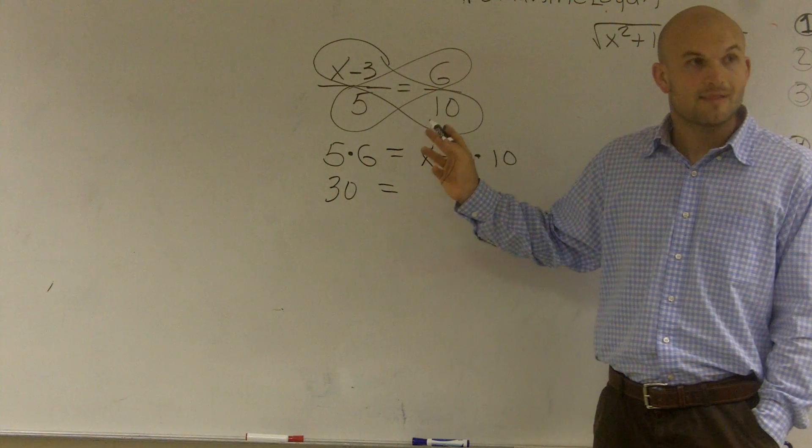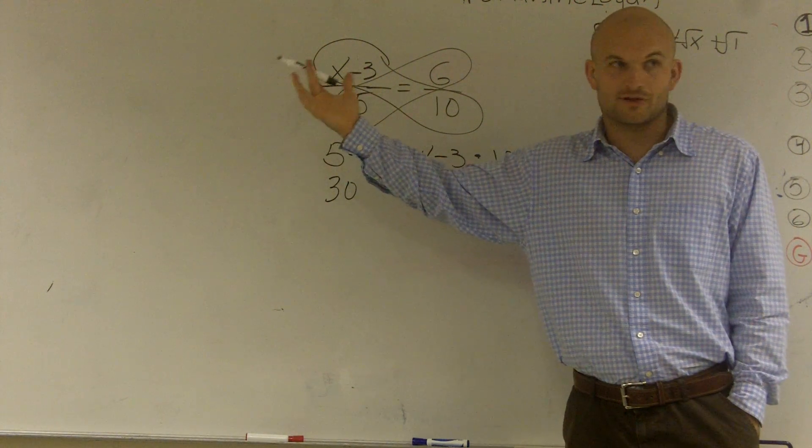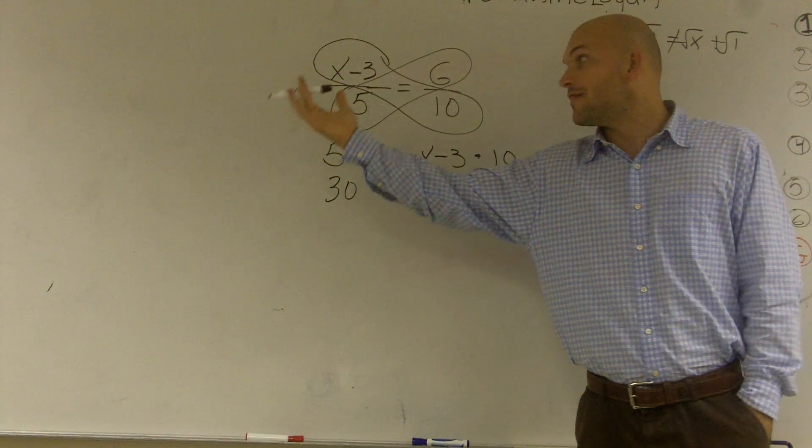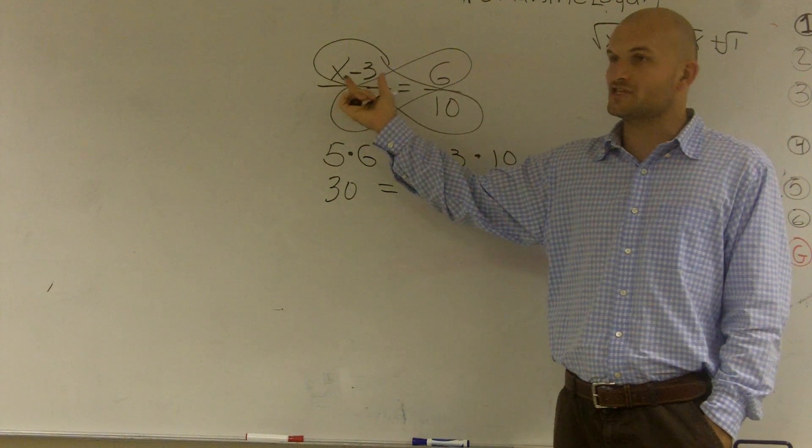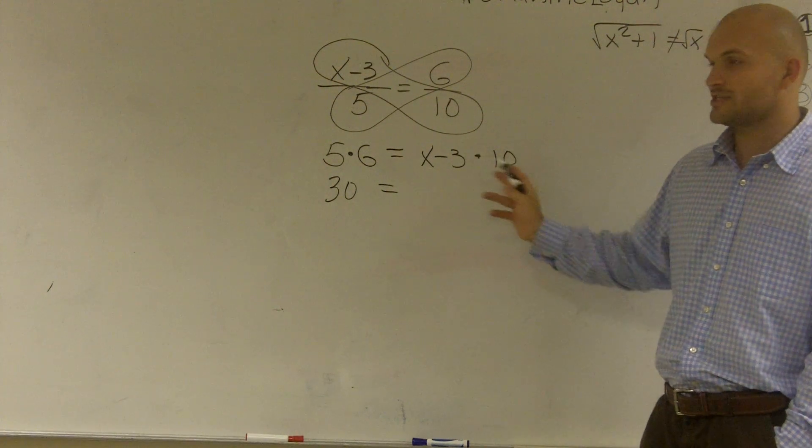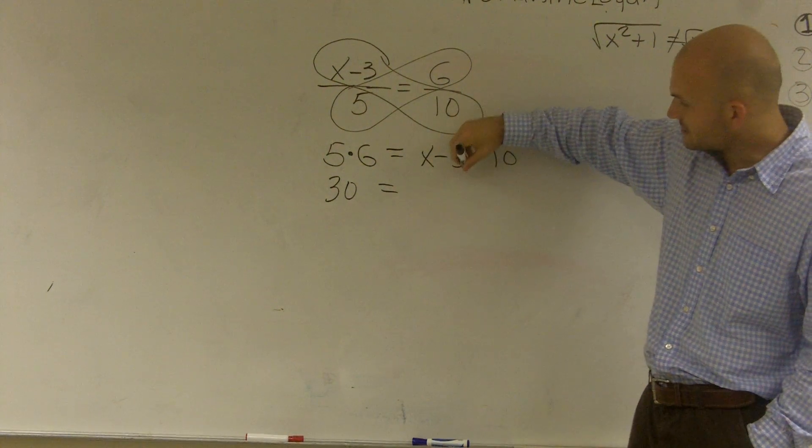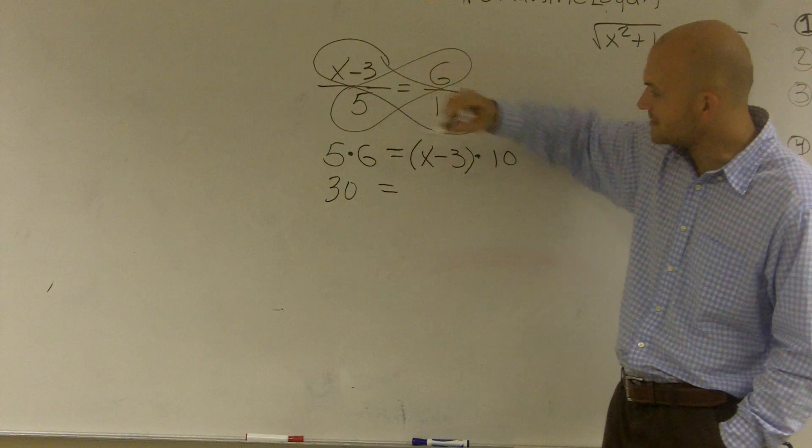That means I'm multiplying x minus 3. That is like together. They're not separate, they are together. This whole expression, x minus 3, I'm multiplying by 10. So right now this just shows 3 times 10. To represent x minus 3 times 10, I need to put it in parentheses.